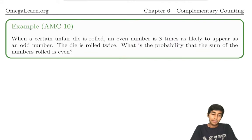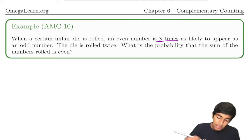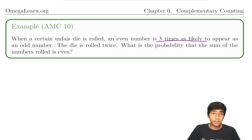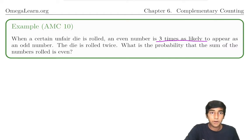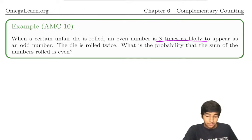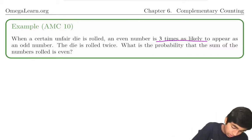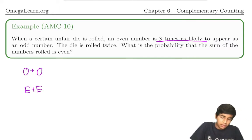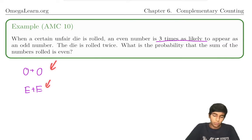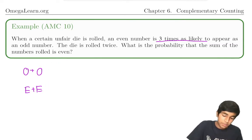Let's take this problem from the AMC 10. When a certain unfair die is rolled, an even number is three times as likely to appear as an odd number. The die is rolled twice. What's the probability the sum of the numbers is even? For the sum to be even, we need odd plus odd, or even plus even. We could do two cases, but can we maybe use complementary counting to make it even simpler?